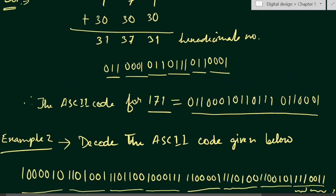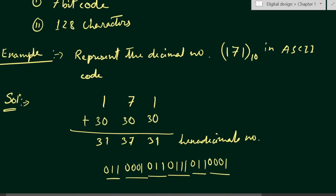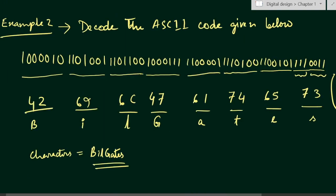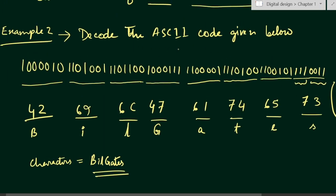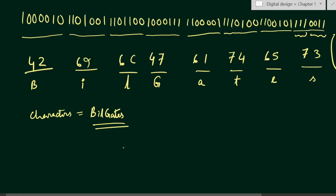In this way you can find out the respective ASCII code from a given number or decode the given ASCII code to their respective characters. Suppose we have another number with a fractional part: 1101011.1001010. In this case, on the left side we have 7 bits, but on the right-hand side we have 6 bits, so you have to add a zero to the right of all the digits.